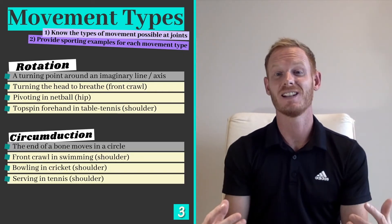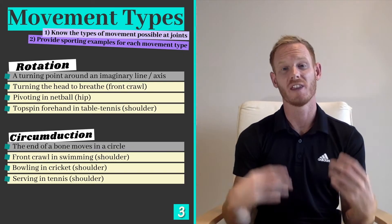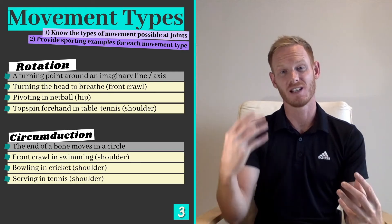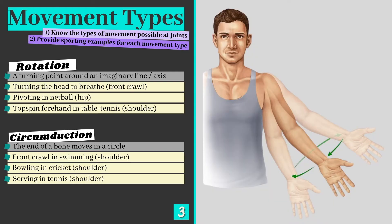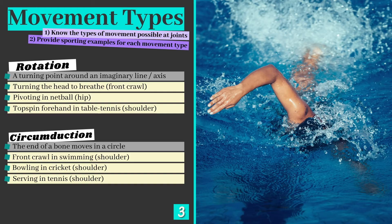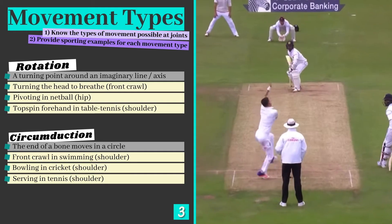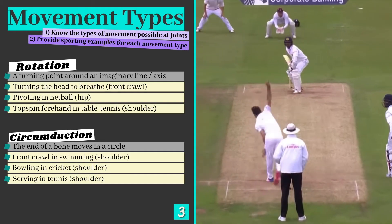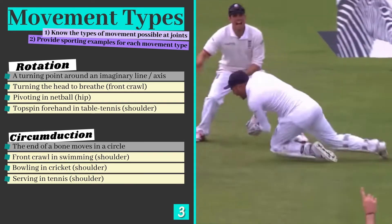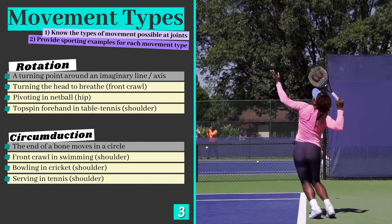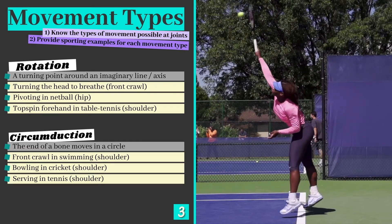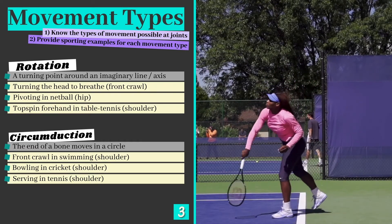Circumduction can easily be confused with rotation, but while the end of a limb stays stationary during rotation, it moves in a circle when circumduction occurs. Both types of movement mostly occur at ball and socket joints. Circumduction can be seen during the front crawl arm action in swimming, when bowling in cricket, and during the preparation, transition, and execution phases of a serve in tennis.